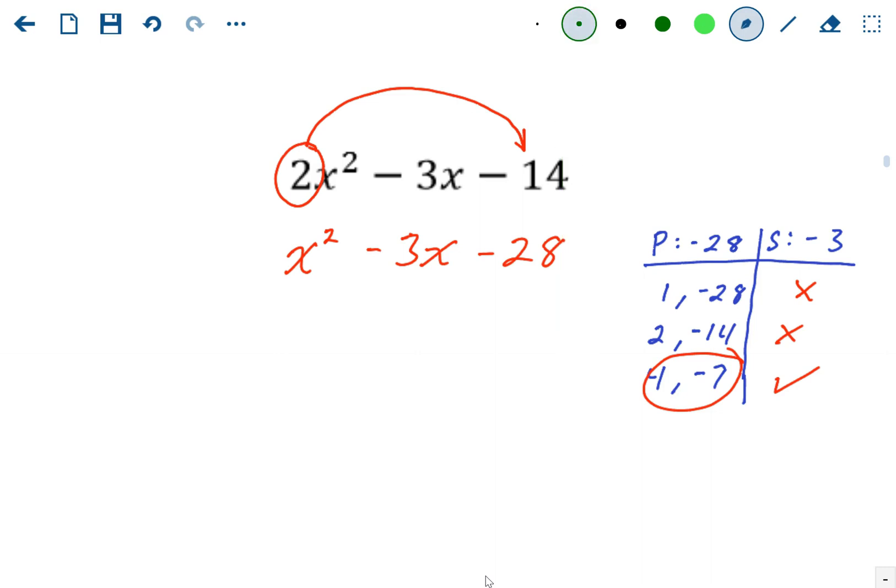All right, so we're going to write it as two binomial factors. x minus 7. We're going to write 4 first. x plus 4 and x minus 7. Okay. Now, again, that factors this x squared minus 3x minus 28. But that wasn't the problem we were given.